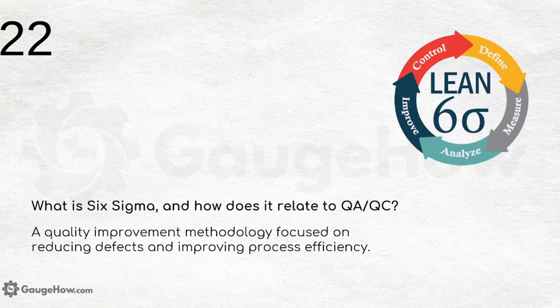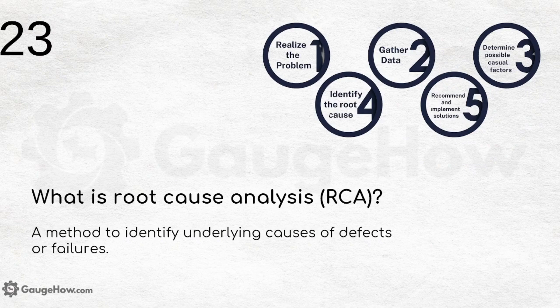What is Six Sigma and how does it relate to QA or QC? It is a quality improvement methodology focused on reducing defects and improving process efficiency. The basic structure of Six Sigma consists of: Define, Measure, Analyze, Improve, and Control. Six Sigma is essential knowledge for anyone entering the field of quality assurance or quality control.